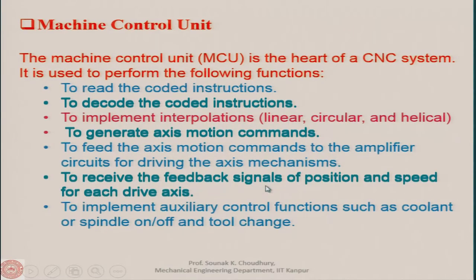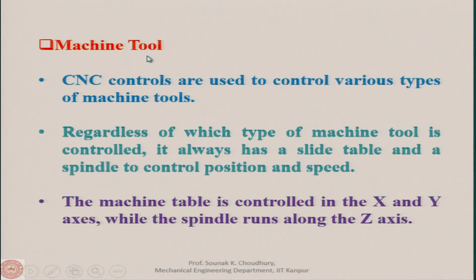This is the receiving of feedback signals of positioning and speed. Next, the MCU implements auxiliary control functions such as coolant or spindle on/off and tool change — all coded in the program. The machine control unit understands the codes and executes them. CNC controls are used to control various types of machine tools; regardless of type, the machine always has a slide table and a spindle to control position and speed. The table is controlled in x and y axes while the spindle runs along the z axis.